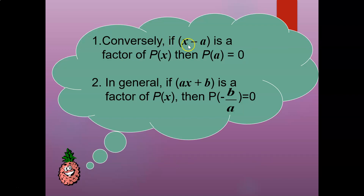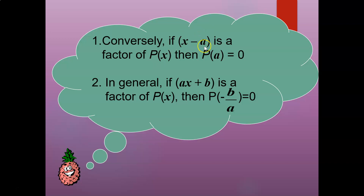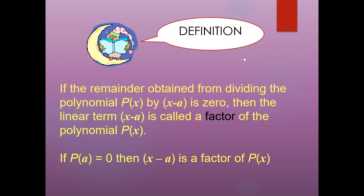Conversely, if x minus a is a factor of P(x), then P(a) must be equal to zero. That's the reverse — if x minus a is a factor of P(x), and we substitute the value a into P(x), we get zero. So the two statements are reciprocal to each other.